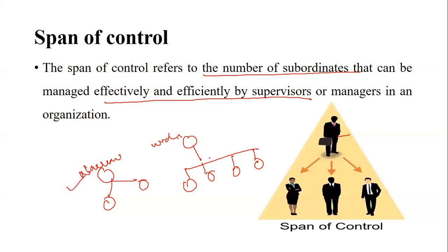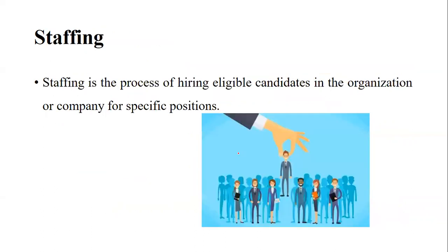Span of control refers to the number of subordinates. Staffing, on the other hand, is the process of hiring eligible candidates in the organization or company for a specific position.